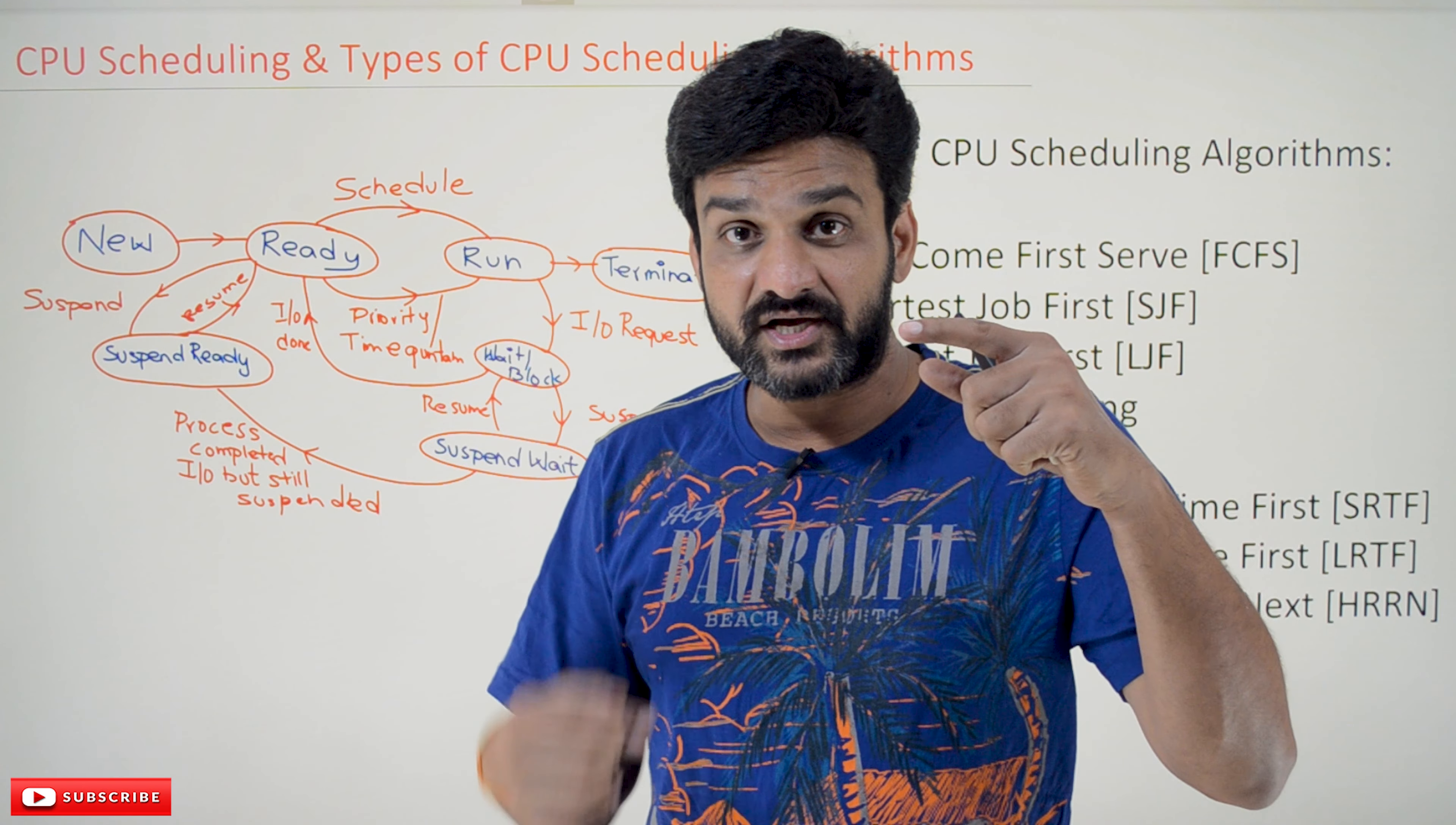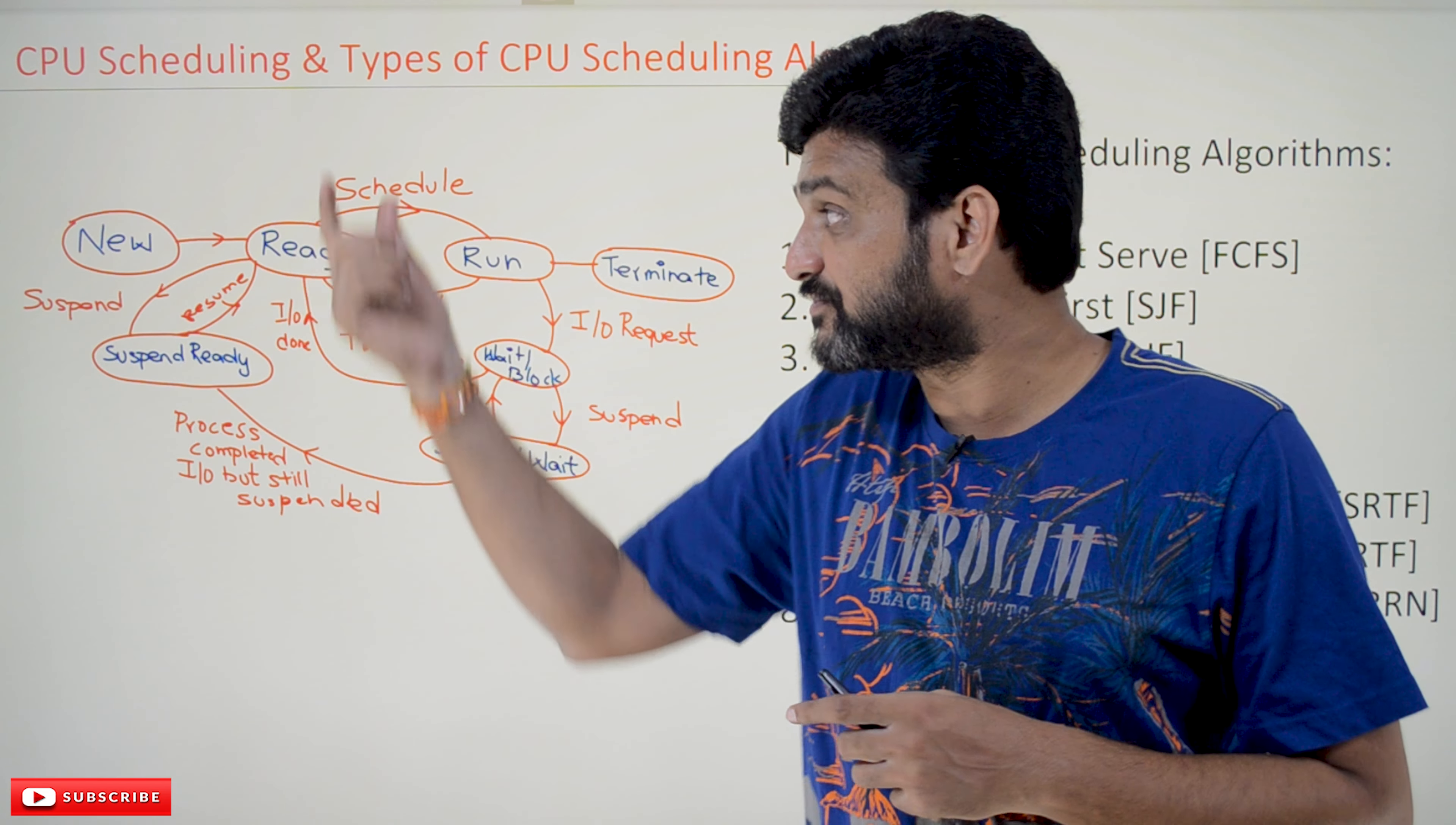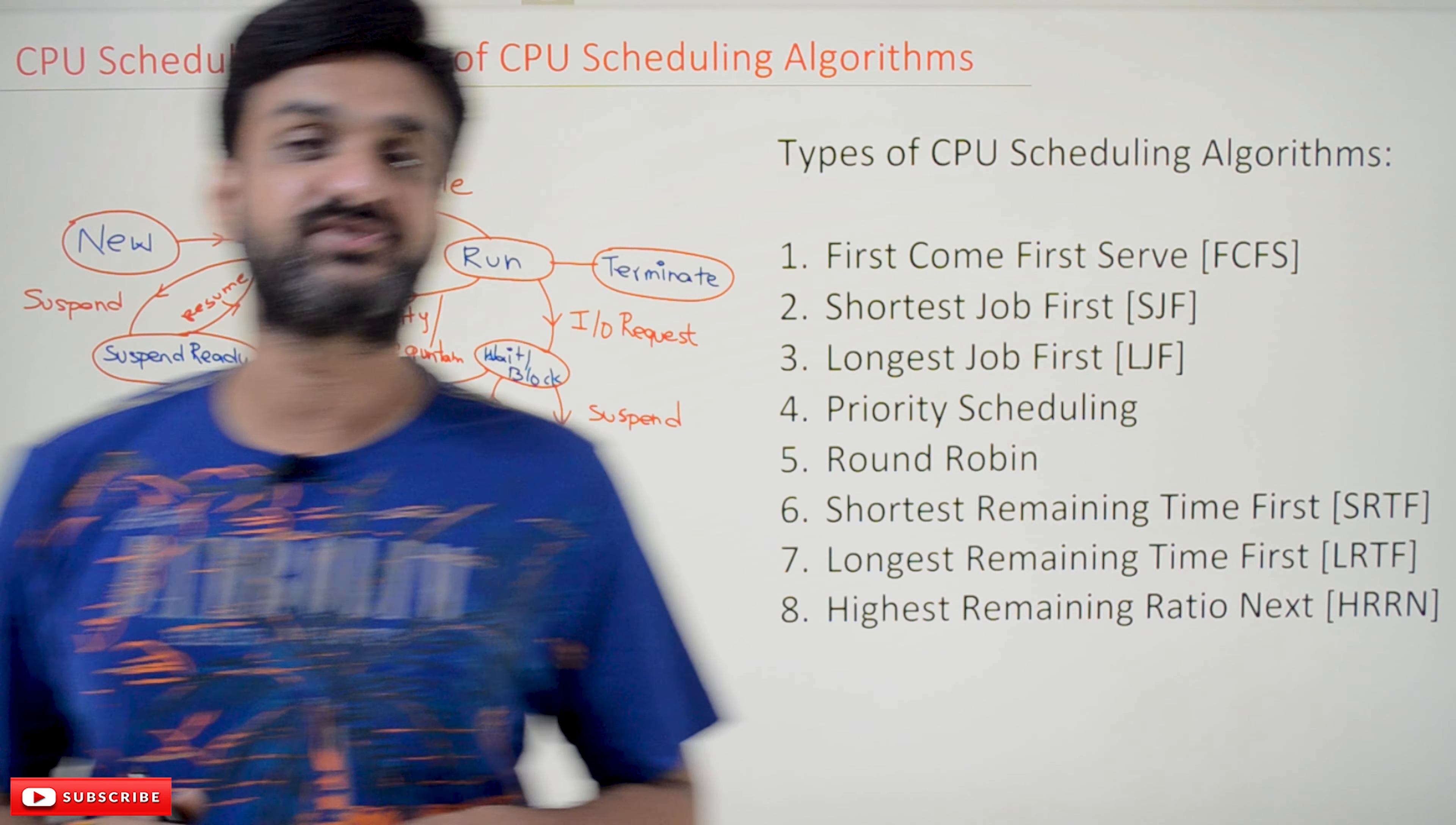The decision of which process to be shifted from ready state to running state, which process to be allocated to the CPU - that is what we call CPU scheduling. There are different types of algorithms for CPU scheduling.